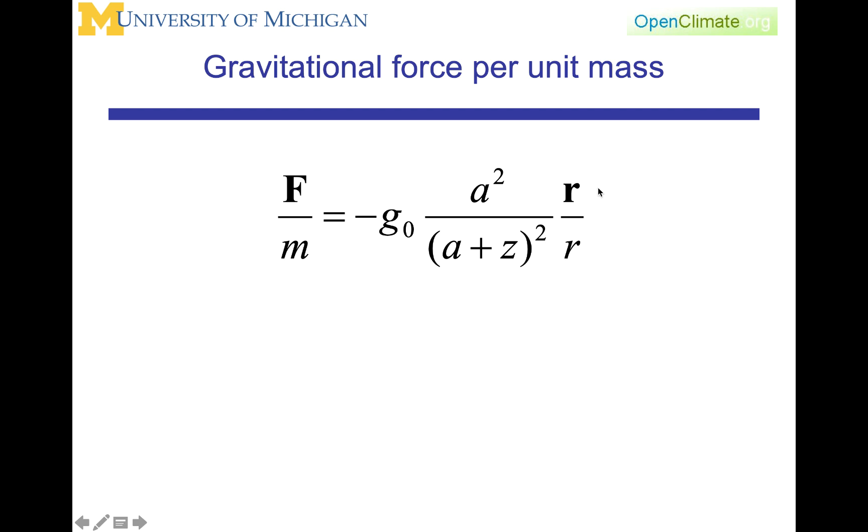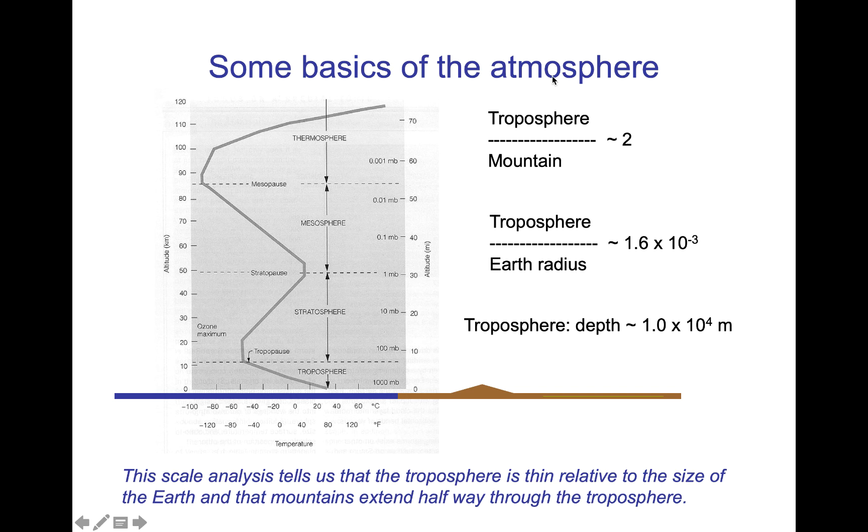Returning to an earlier lecture here, some basics of the atmosphere. Here is the temperature profile of the atmosphere versus height going up to something over 100 kilometers. We had these numbers that we had before of the tropospheric depth being about 10 kilometers, and the depth of the troposphere related to the earth's radius being this very small number of 1.6 times 10 to the minus 3, however the relationship of the depth of the troposphere to a mountain being something about 2. In this case, therefore, the scale analysis tells us that the troposphere is thin relative to the size of the earth, and that will be one of the things that we consider in whether or not we could ignore that term z in our representation of the gravity.